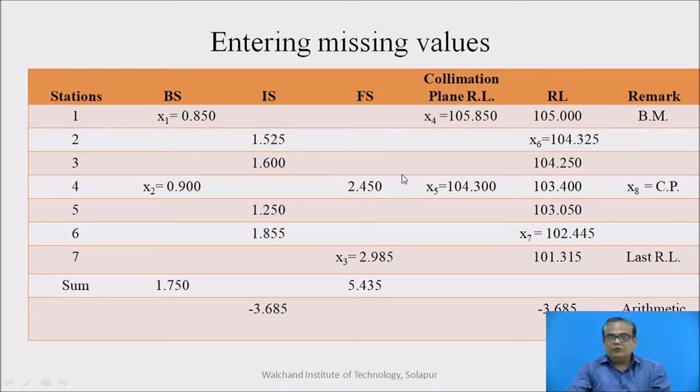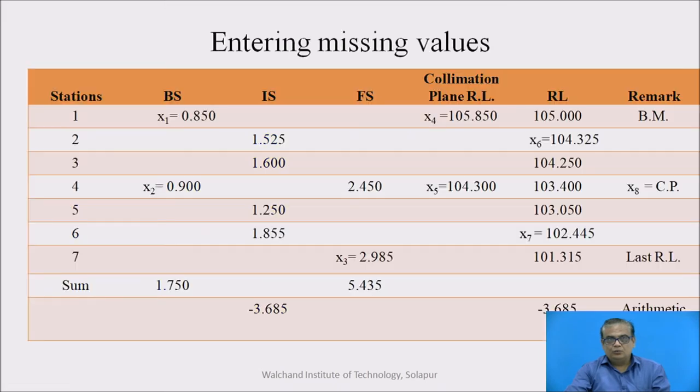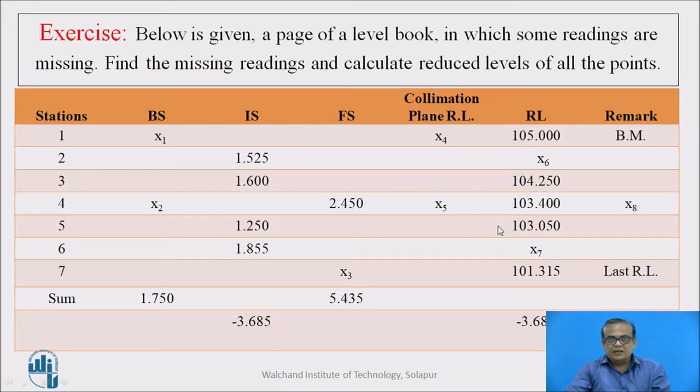Now, these two readings we have found, which next we can find? We are having here X4, we are having intermediate side reading. Collimation plane RL, intermediate side reading. We can find X6 easily from the relation equation number 1. Collimation plane RL minus IS reading here, intermediate side reading must be equal to RL of this station. So using again the equation second, what we get? X6 is equal to 104.325. So 104.250, this is the value. So once we have got this, let us see now which next value we can find.